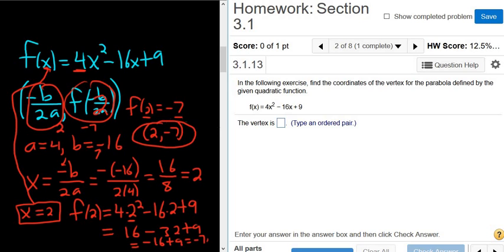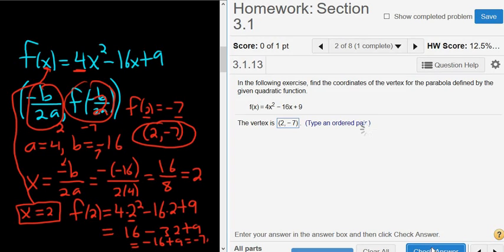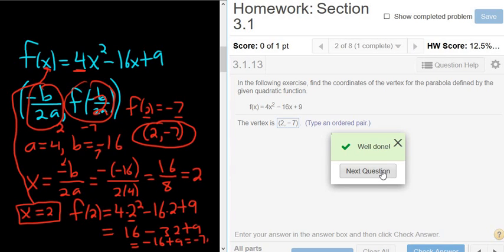So let's try it. Make sure we got it right. So I'll go ahead and type it in. Parentheses, 2 comma negative 7, parentheses. Then I'm going to click check answer. And that's it. We got it right. Hope that made sense.